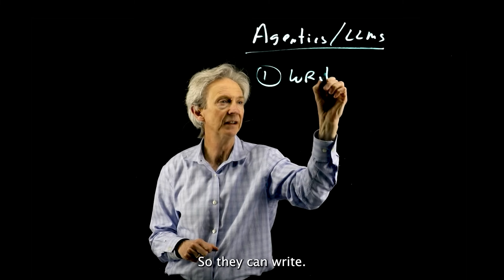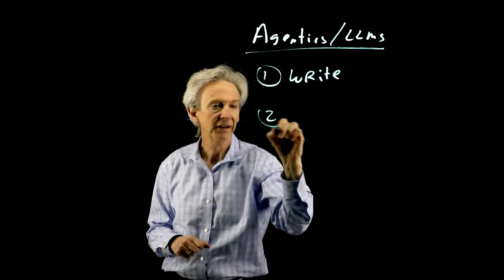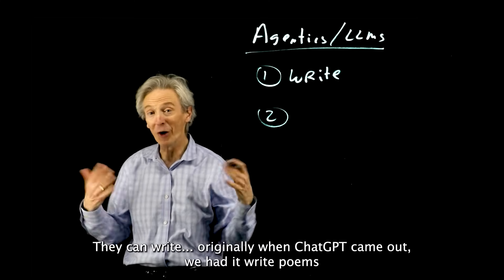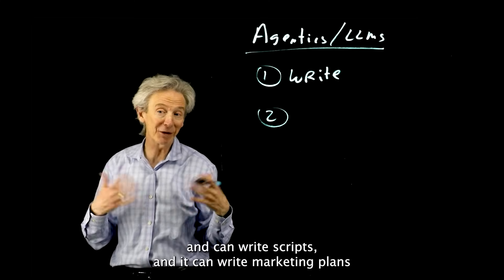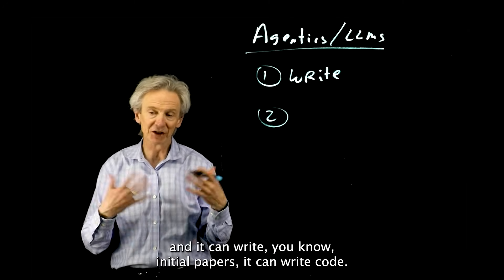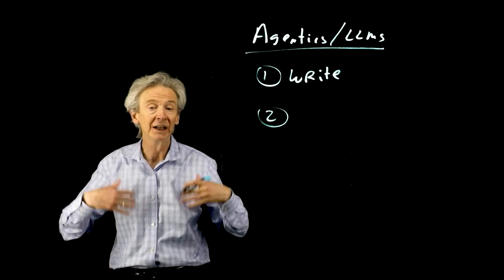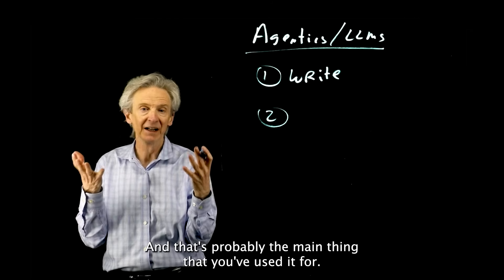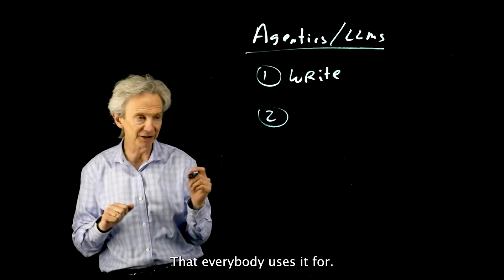Agents and LLMs can do a number of things, only one of which you've probably done. They can write. When ChatGPT came out we had it write poems and scripts and marketing plans and initial papers. It can write code. These are the things it does a lot of writing and that's probably the main thing that you've used it for, that everybody uses it for.